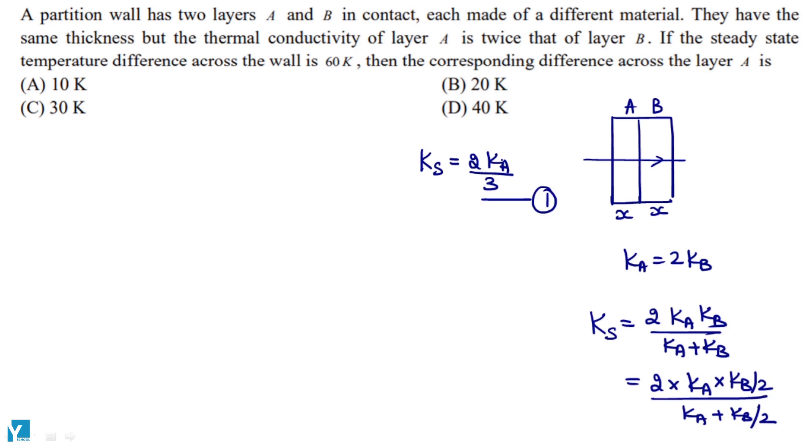If the steady state temperature difference across the wall is 60 Kelvin, theta 1 minus theta 2 is 60 Kelvin. And we have said that the corresponding difference across layer A is what we have to find out.